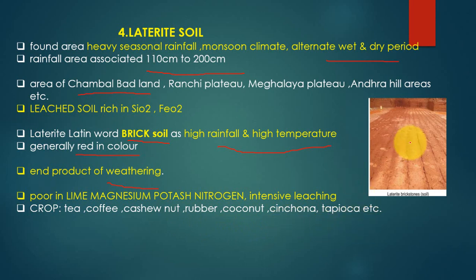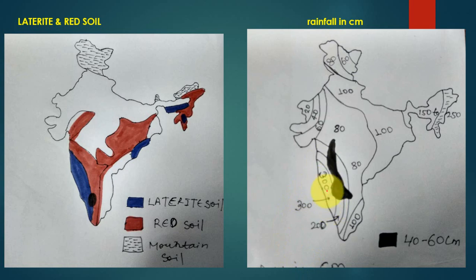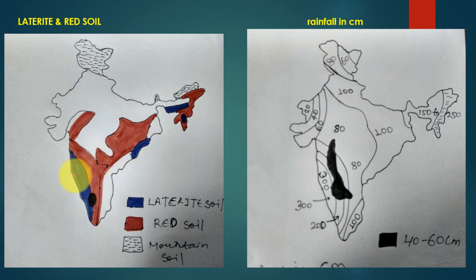Laterite soil is generally red in color and is a product of weathering — formed by dissolved rock through the action of water and other weathering agents. It is poor in lime, magnesium, potassium, and nitrogen due to intensive leaching caused by heavy rainfall and high temperatures. Crops grown in laterite soil include tea, coffee, cashew nut, rubber, coconut, and sapota. On the map, laterite soil is shown in blue and is found in Karnataka, Maharashtra, Kerala, the Western Ghats, parts of the Eastern Ghats, and West Bengal.